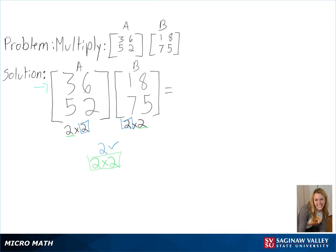To start, we will multiply the top row by the left column, so we will get 3 times 1 plus 6 times 7. Then we can multiply the top row by the right column to get 3 times 8 plus 6 times 5.